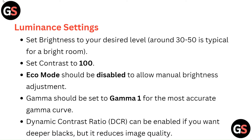Gamma should be set to Gamma 1 for the most accurate gamma curve. Dynamic contrast ratio (DCR) can be enabled if you want deeper blacks, but it reduces image quality.